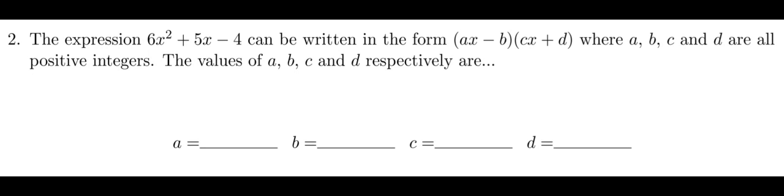This question says the expression 6x² + 5x - 4 can be written in the form (ax - b)(cx + d) where a, b, c, and d are all positive integers. What are they?